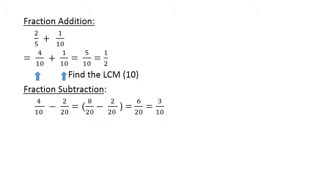Fraction subtraction. 4 over 10 minus 2 over 20. Find the lowest common multiple. 8 over 20 minus 2 over 20 equals 6 over 20 equals 3 over 10. And remember this is the simplest form.